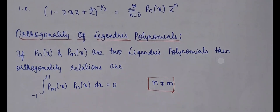Then, orthogonality of Legendre polynomials. The orthogonality property is given by: if Pₙ(x) and Pₘ(x) are two Legendre polynomials, then the orthogonality relation is: ∫₋₁⁺¹ Pₘ(x)·Pₙ(x) dx = 0. The orthogonality condition for Legendre polynomial holds when n ≠ m.